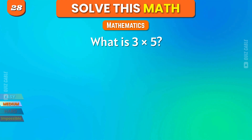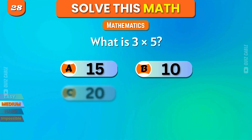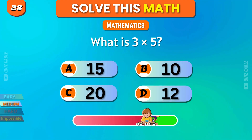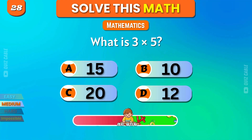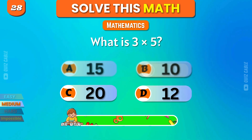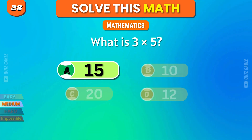What is 3 times 5? 15, 10, 20, 12. Correct, 15.